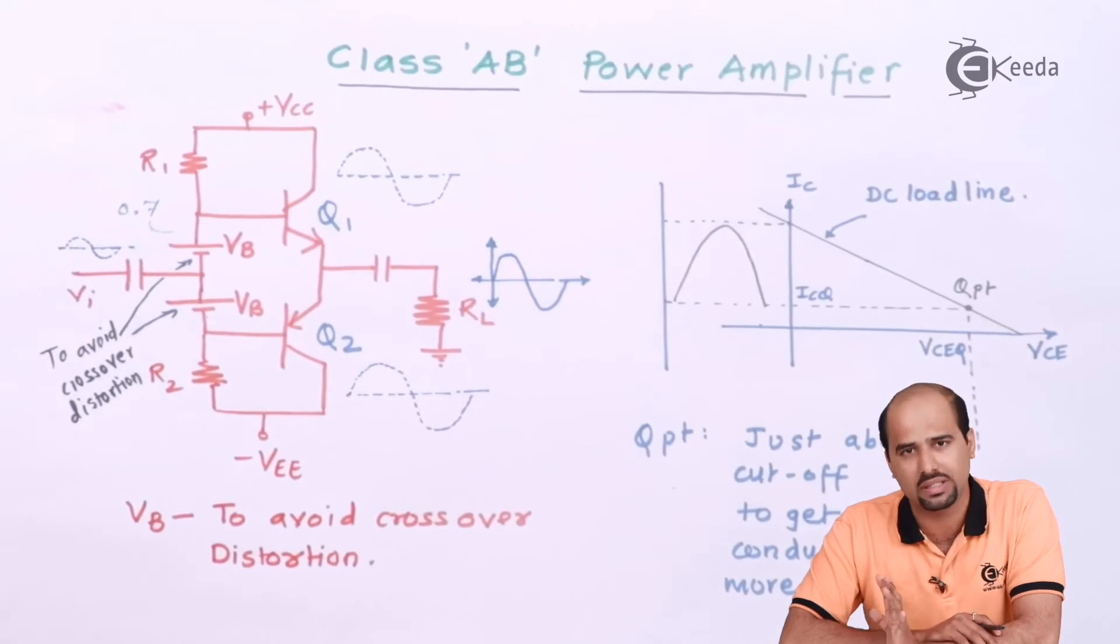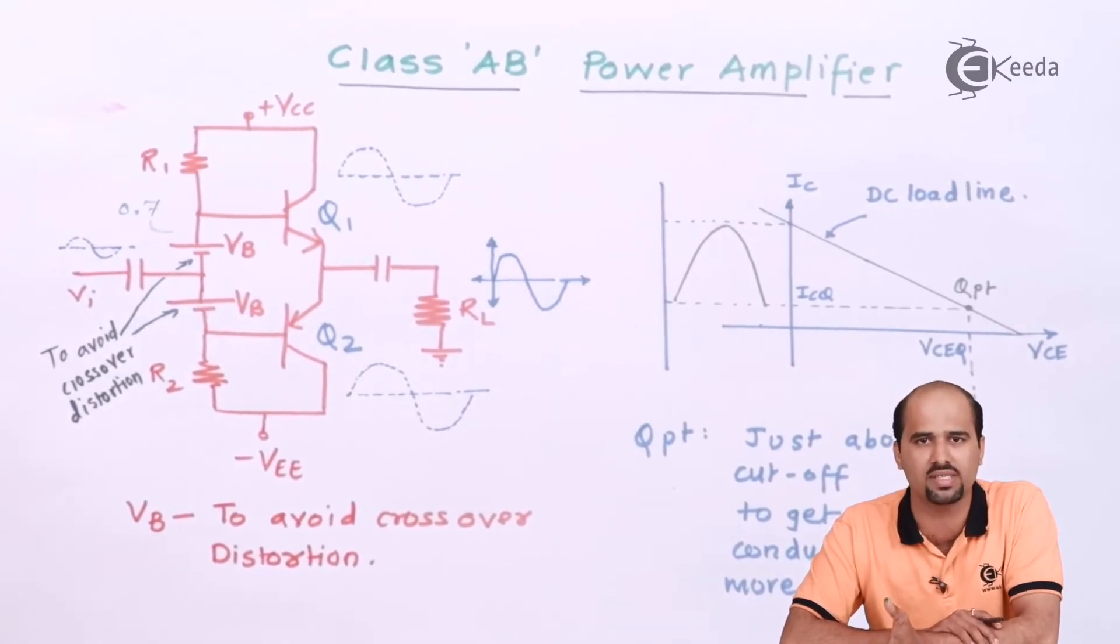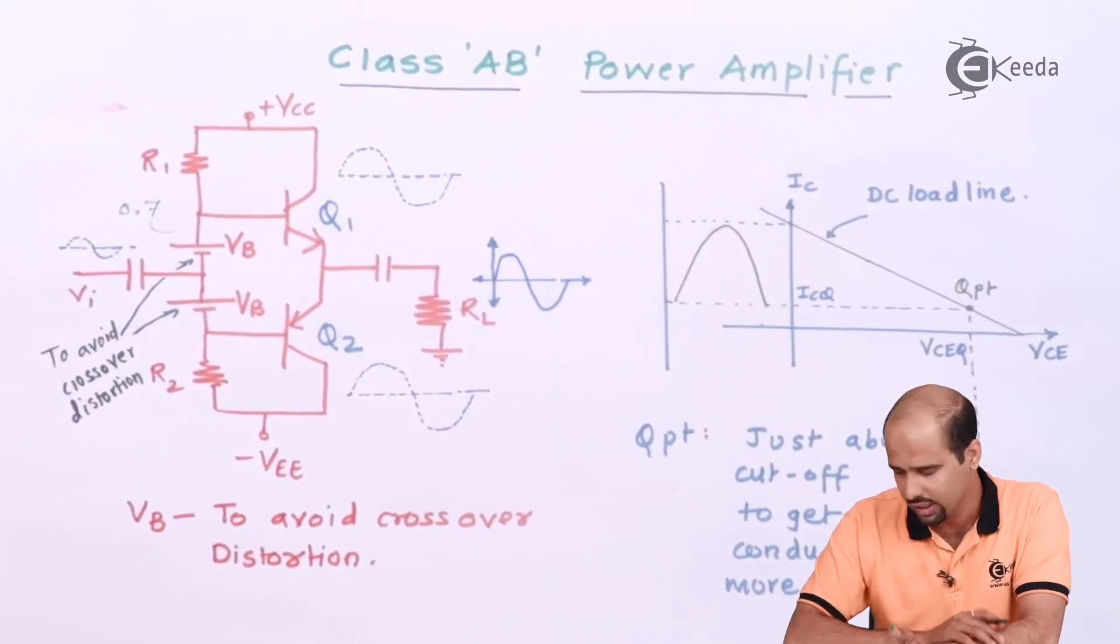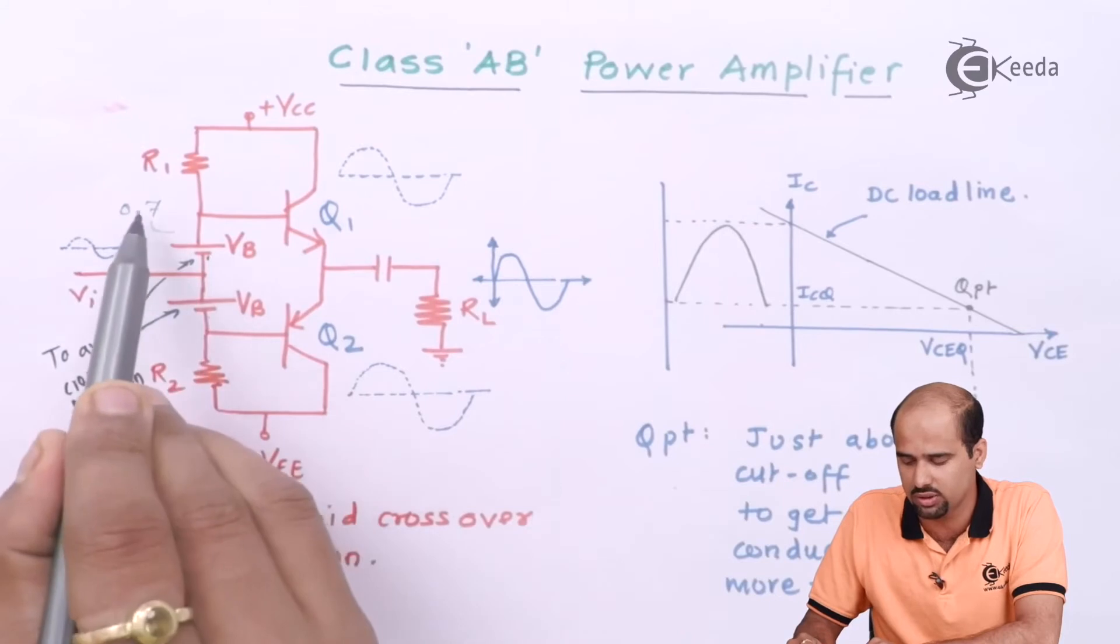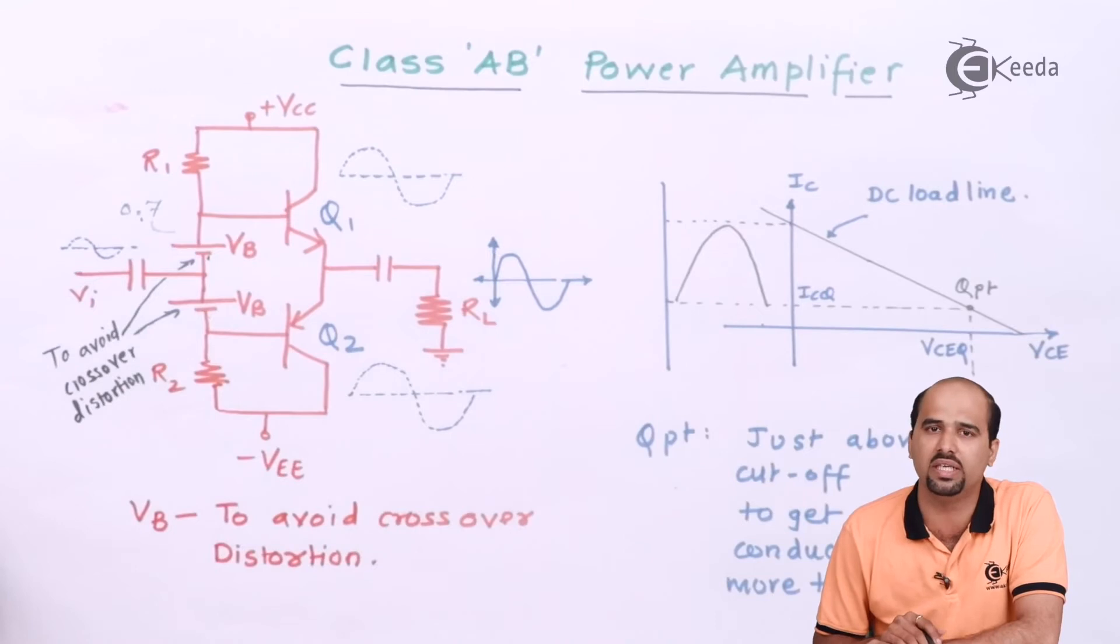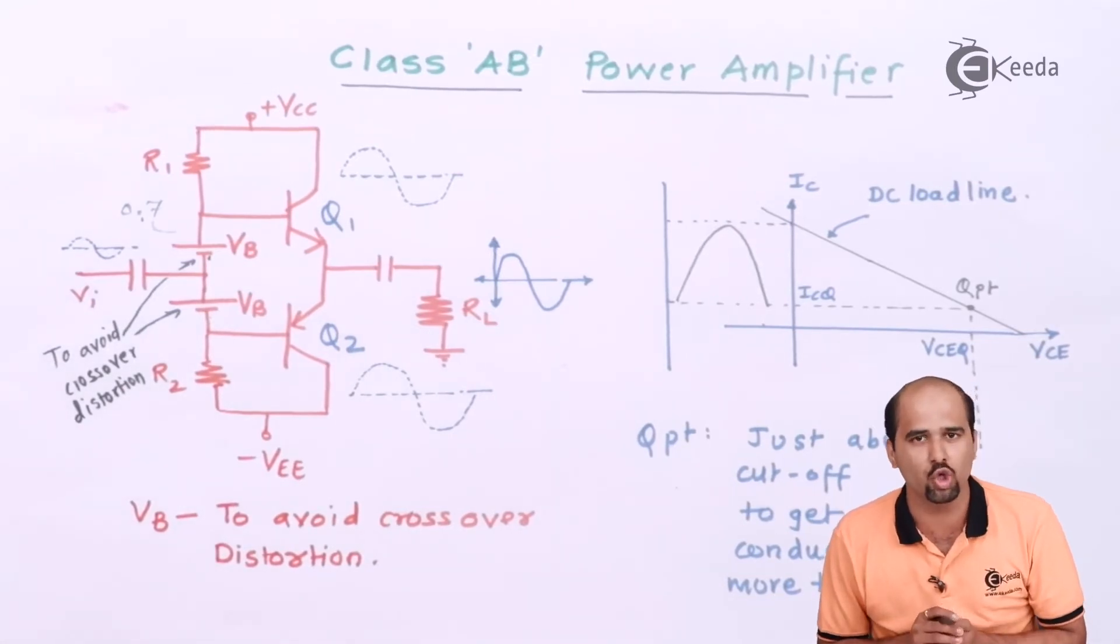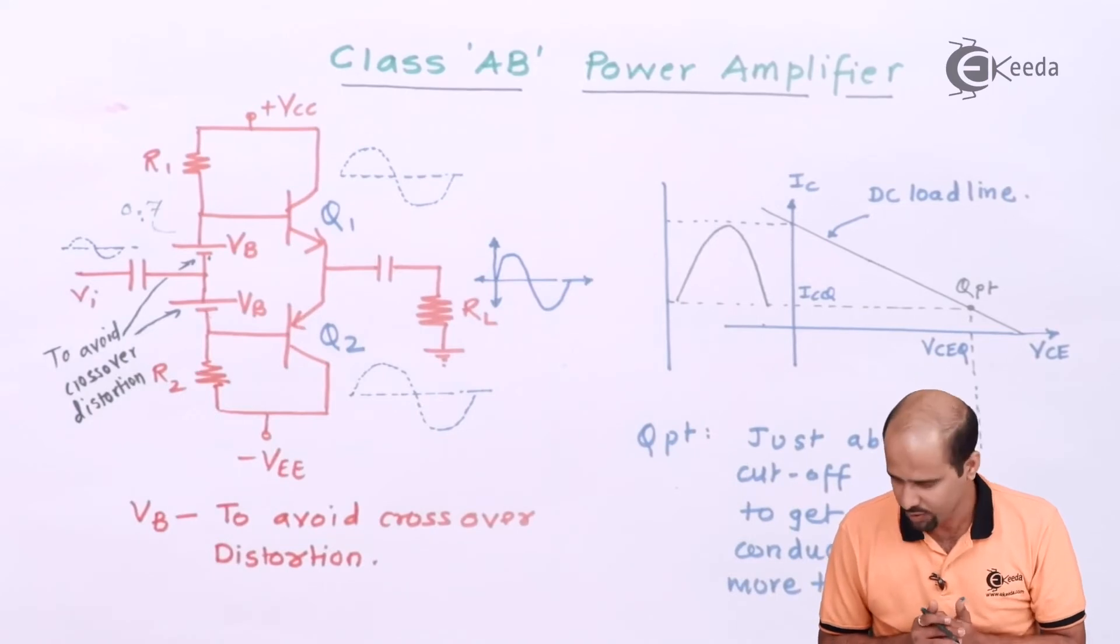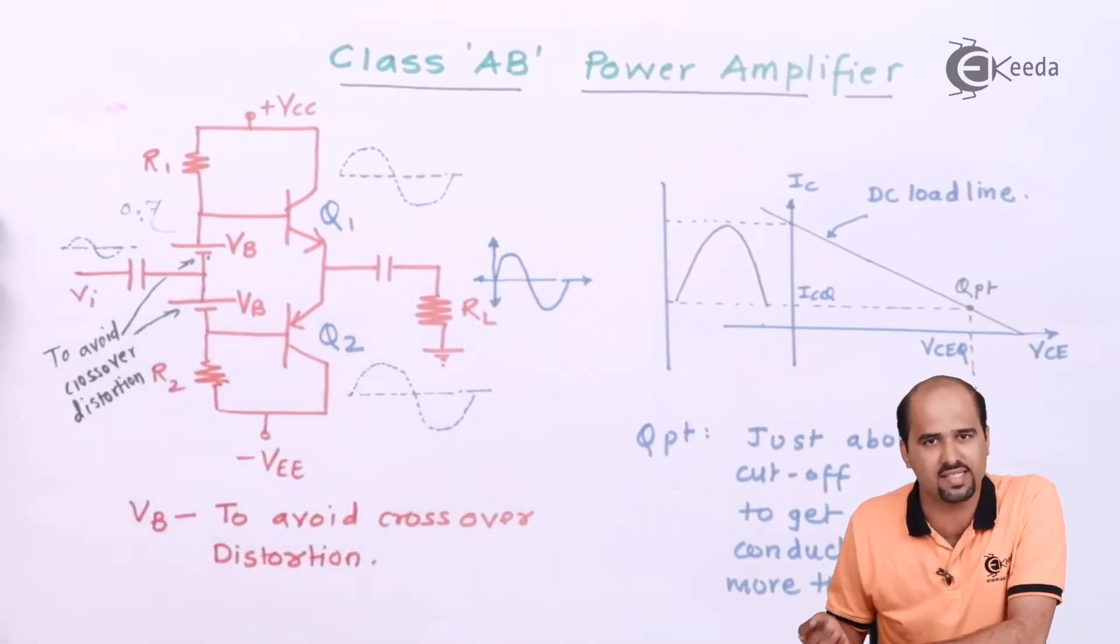So what will happen? Current will flow even if the voltage is below 0.7. That is provided by VB. So particular bias point just above 0.7 if I'm giving, then I can achieve the conduction angle also more than 180 degree. First of all, I have reduced the crossover distortion and secondly, I can achieve the conduction angle more than 180 degree as well.